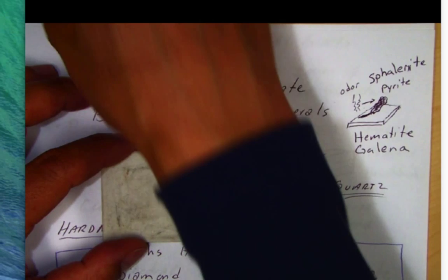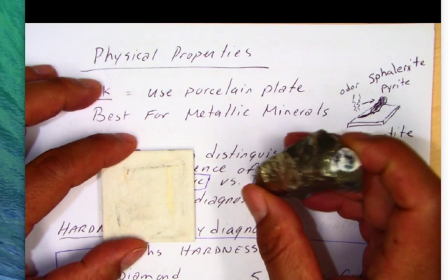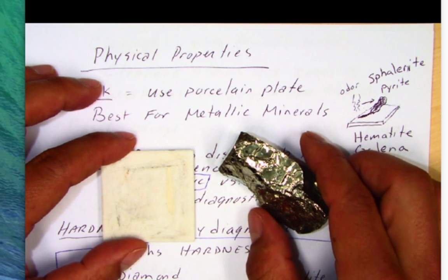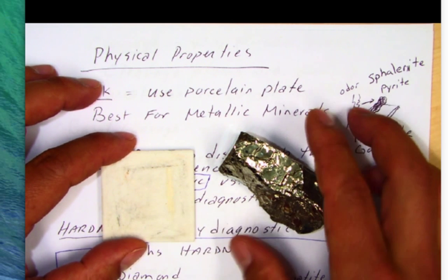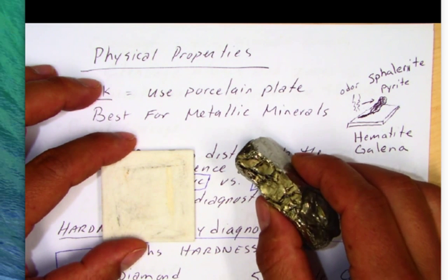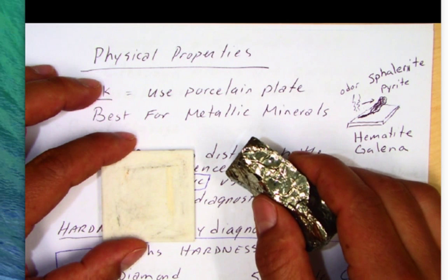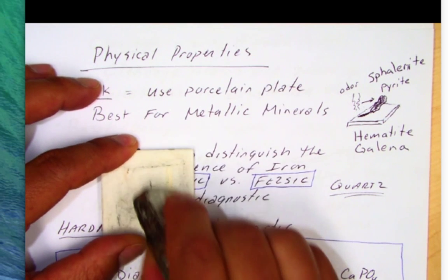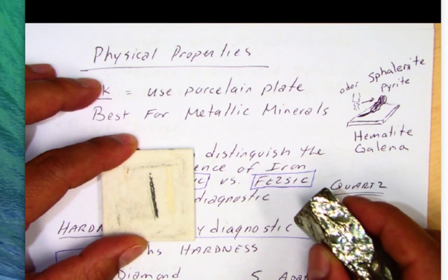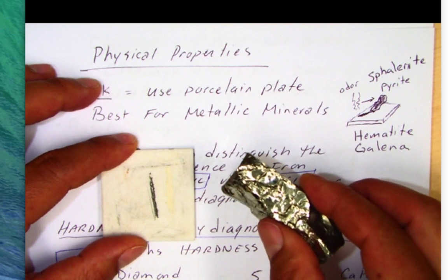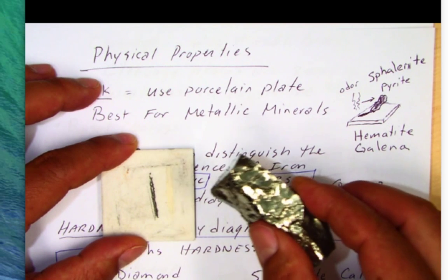Another mineral I want to test is pyrite — you may know it as fool's gold. Pyrite is an iron sulfide and will not give you an odor. But one thing about pyrite: it's a hard mineral. We know it's not gold because if you bite into pyrite, you'll break your teeth, whereas gold will bend a little bit. When I streak the pyrite, note that it gives a dark black streak — very characteristic of pyrite. Gold will give you a gold streak, not a black streak.